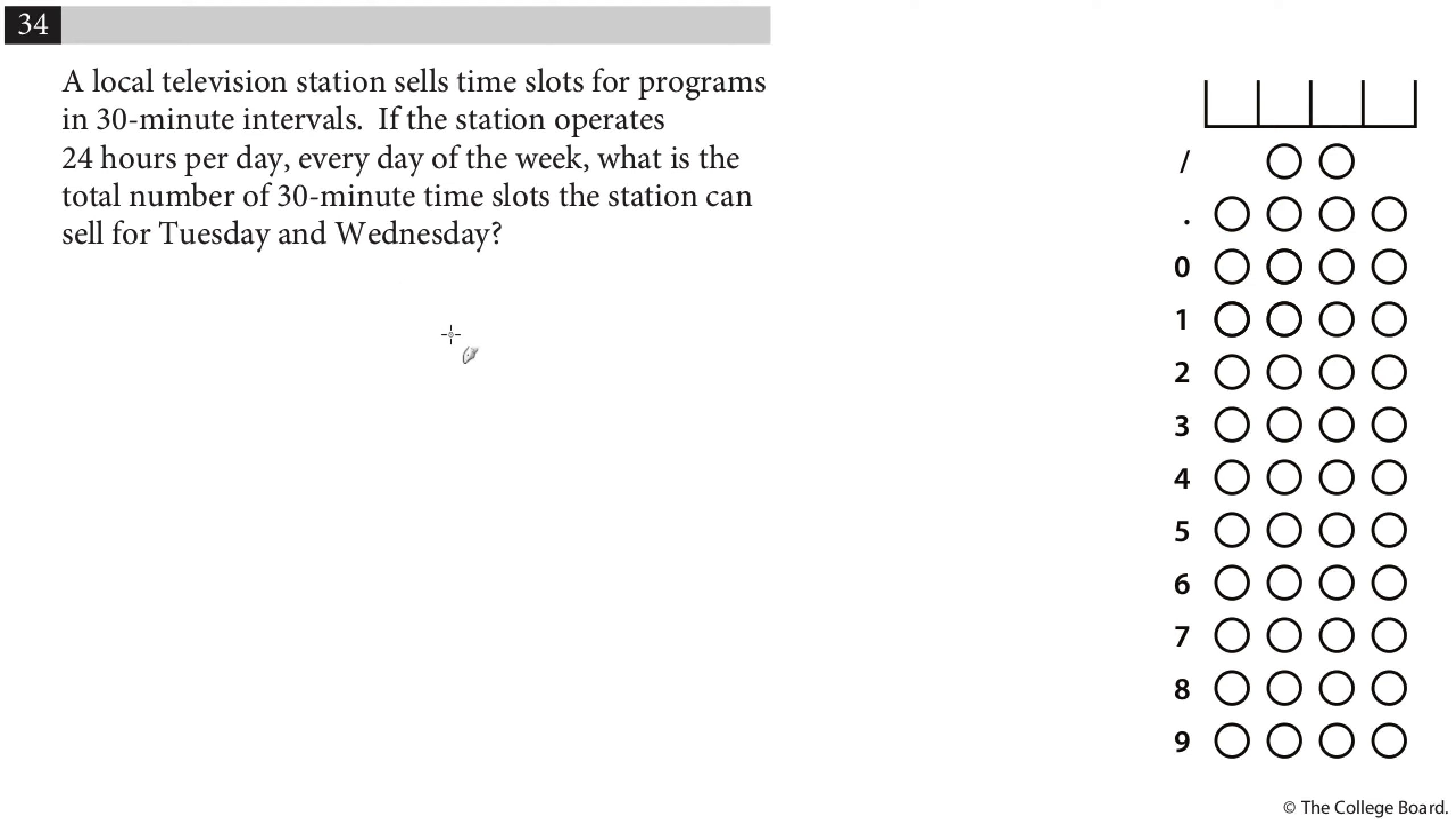Okay. So a local television station sells time slots for programs in 30-minute intervals. If the station operates 24 hours per day every day of the week, what is the total number of 30-minute time slots the station can sell for Tuesday and Wednesday? Okay, so 24 hours a day every day of the week, but I don't actually do every day of the week, I do Tuesday and Wednesday. So this is basically some sort of unit conversion idea here. I basically need to know how many 30 minutes are in two days.